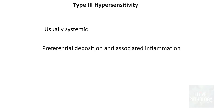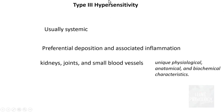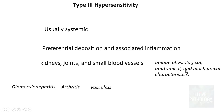Type 3 hypersensitivity reactions are usually systemic, with preferential deposition and associated inflammation in the kidneys, joints, and small blood vessels. These sites have unique physiological, anatomical, and biochemical characteristics. If the kidney is involved, it results in glomerulonephritis; likewise it can cause arthritis and vasculitis.